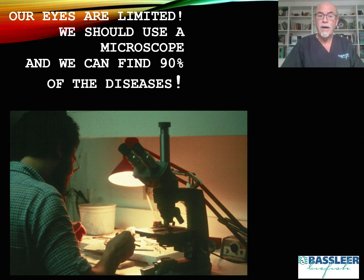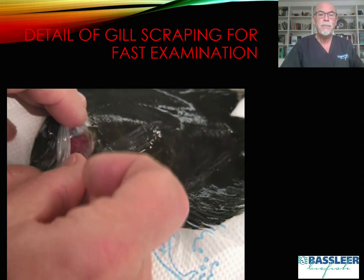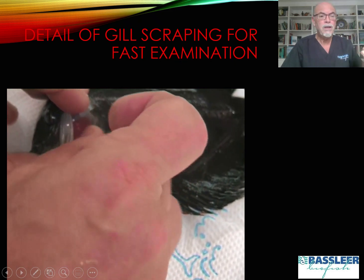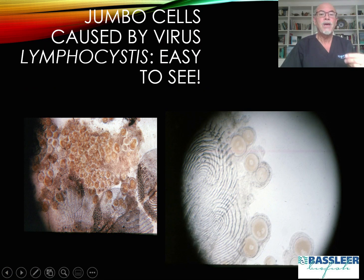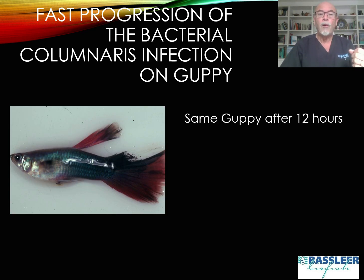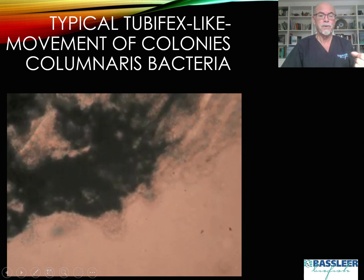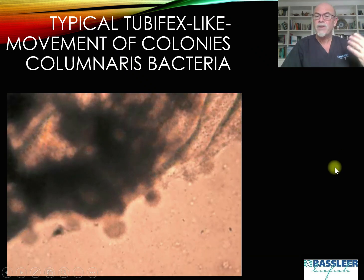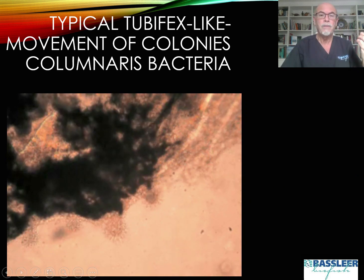Our eyes are limited. That's why I will train you how to use a microscope, and we can address 90% of diseases by simple microscopic examination. By using a simple scraping of the gills, we can determine many parasites easily, just without coloring or staining techniques. We can recognize jumbo cells — for example, lymphocystis — which are easy to see. We can learn about the progress of a nasty bacterial infection called columnaris, here on a guppy and then the same guppy 12 hours later. We have to detect problems as soon as possible. Without any coloring technique, a simple magnification at 300 to 400 times allows you to find bacterial colonies in microscopic examination.